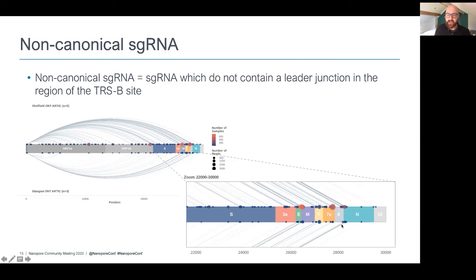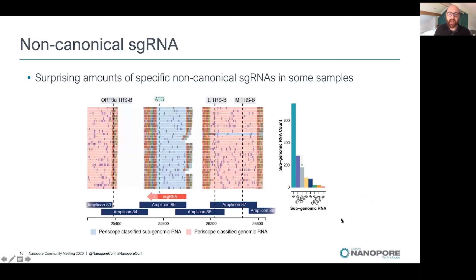It's not well understood how this process works, making Periscope's ability to detect non-canonical subgenomic RNAs particularly interesting. In some samples, these non-canonical subgenomic RNAs are expressed at very high levels — for example, at position 27544, almost 200 reads support one non-canonical subgenomic RNA. Comparing amplicon 87, which shows normal genomic RNA covering the whole amplicon, with amplicon 85, you can see truncated reads containing leader sequence, confirming these are subgenomic RNAs with no known ORF start site at this location.